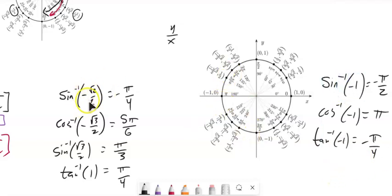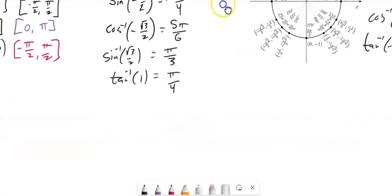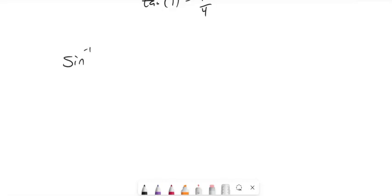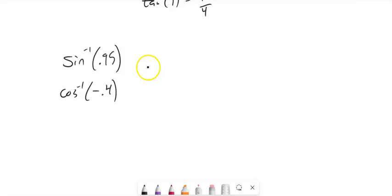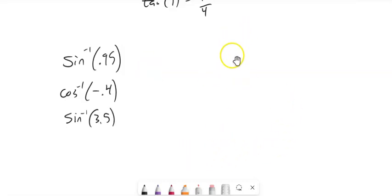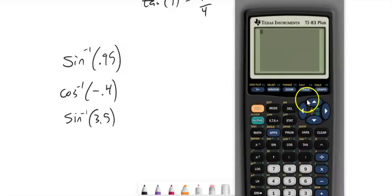Those were familiar benchmark angles. I could also ask: what is inverse sine of 0.95, inverse cosine of negative 0.4, or inverse sine of 3.5? One of those should make you uncomfortable. For values not on the unit circle, let's use technology — a calculator as a big lookup table.